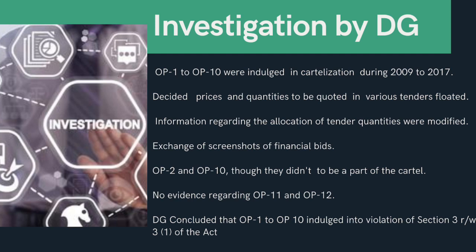The Director General described in detail the product in question — composite brake blocks — and explained the procurement mechanism of CBBs by zonal railways through the floating of tenders. From various evidences collected during its investigation, which included emails and messages exchanged through WhatsApp, SMSs, etc. between the opposite parties, the DG concluded that OP1 to OP10 were indulging in cartelization during the period of 2009 to 2017.